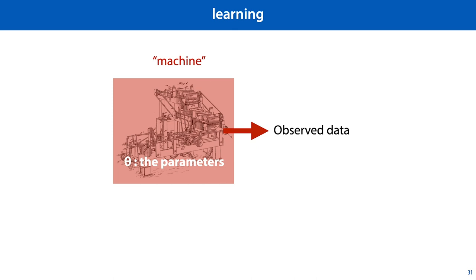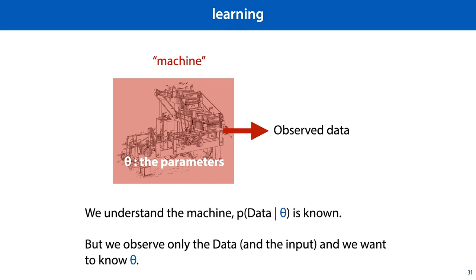We know how the machine works, so if we know theta, we know the probability of each outcome, each data set. The problem is that we only observe the data, and from the data we want to infer the configuration of the machine.